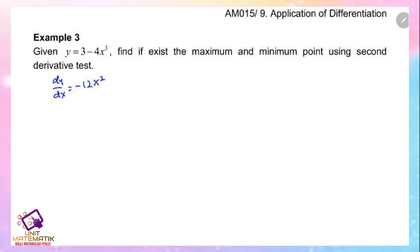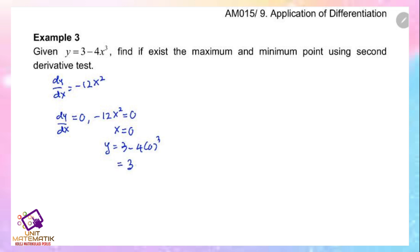Proceed to find the stationary point by setting dy/dx equal to 0, giving x equals 0. Find the value of y: y equals 3 minus 4 times 0 cubed, so y equals 3. Therefore (0, 3) is a stationary point.